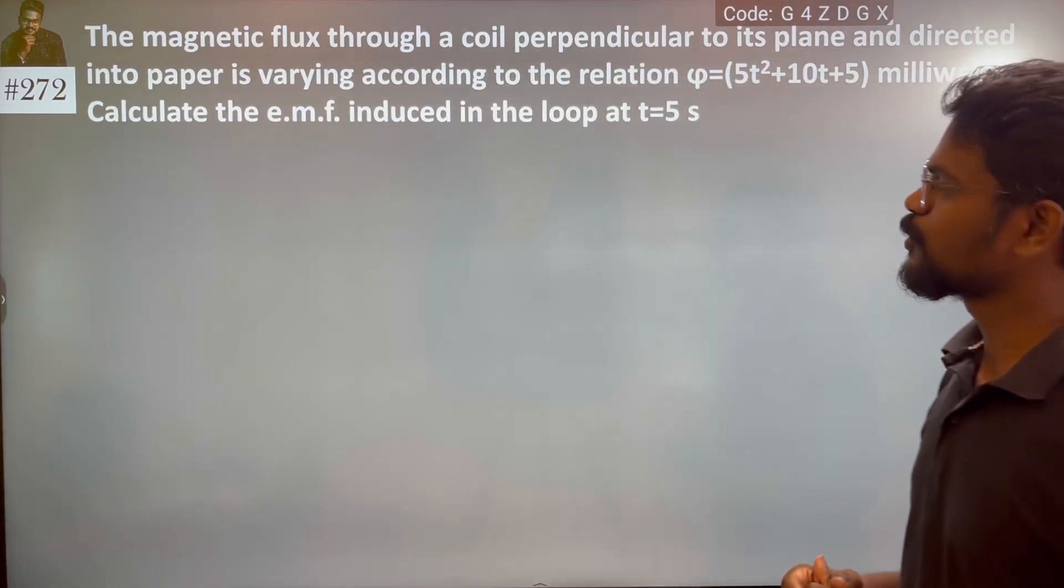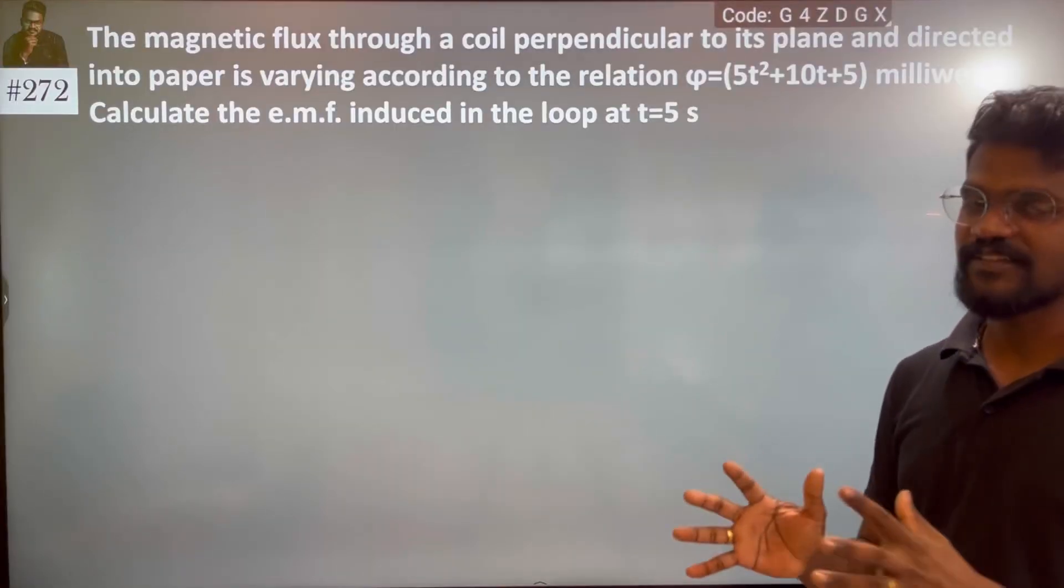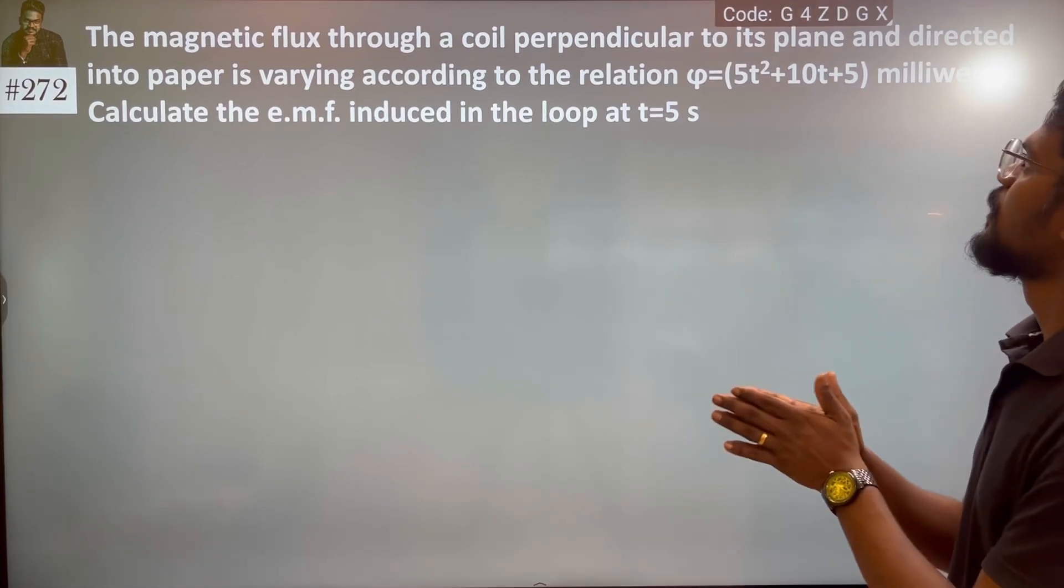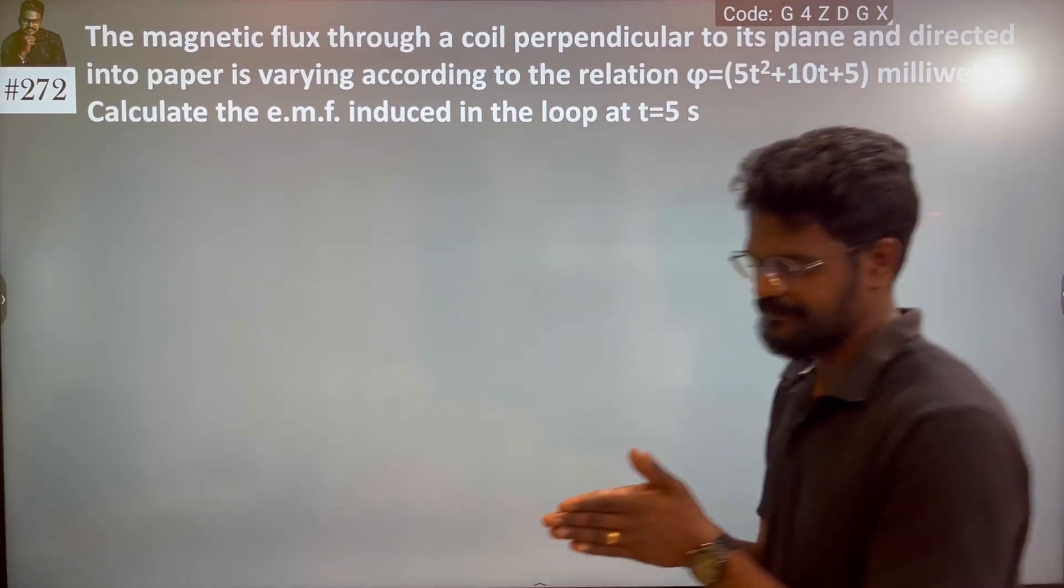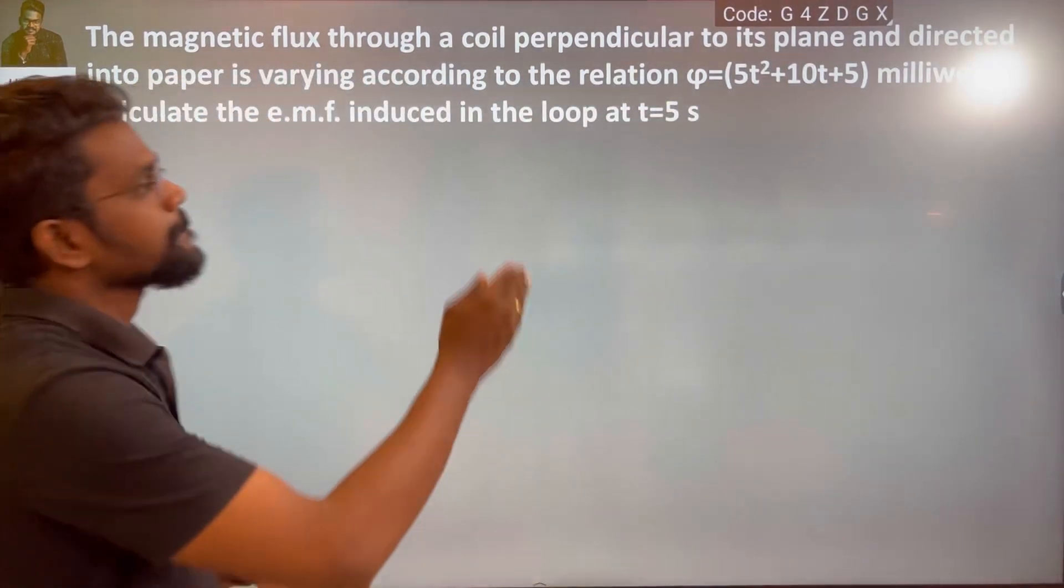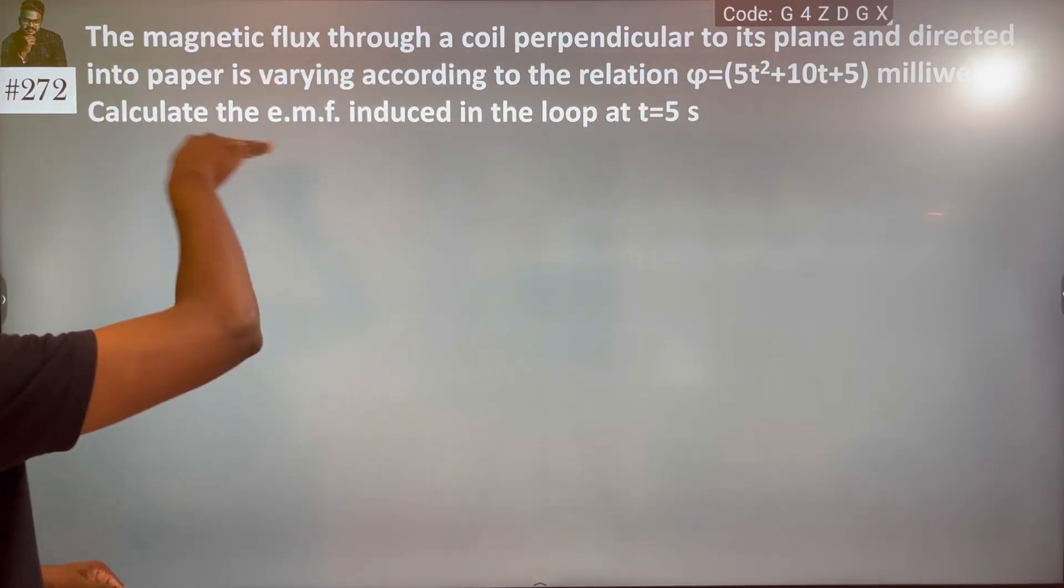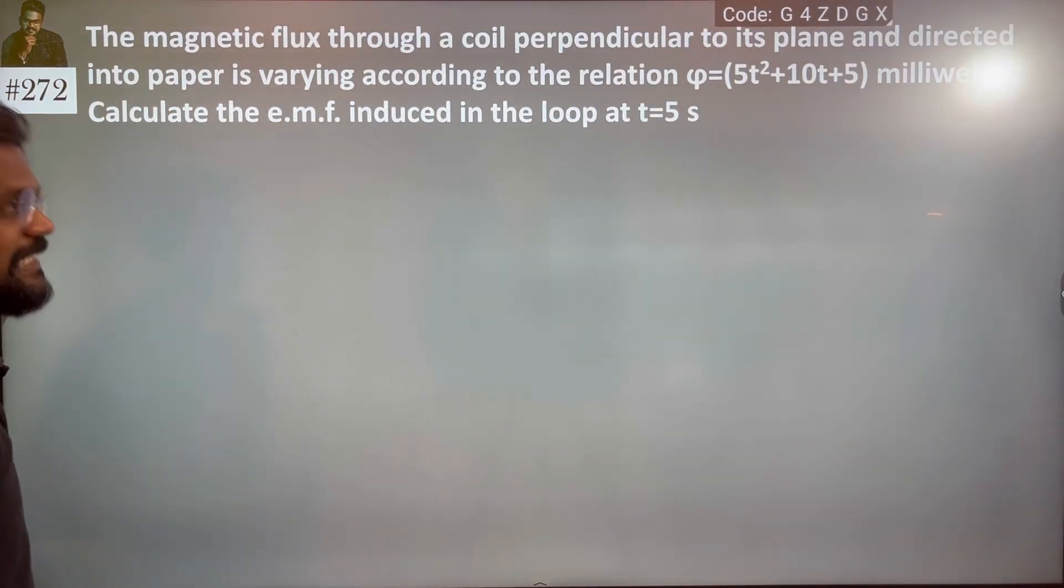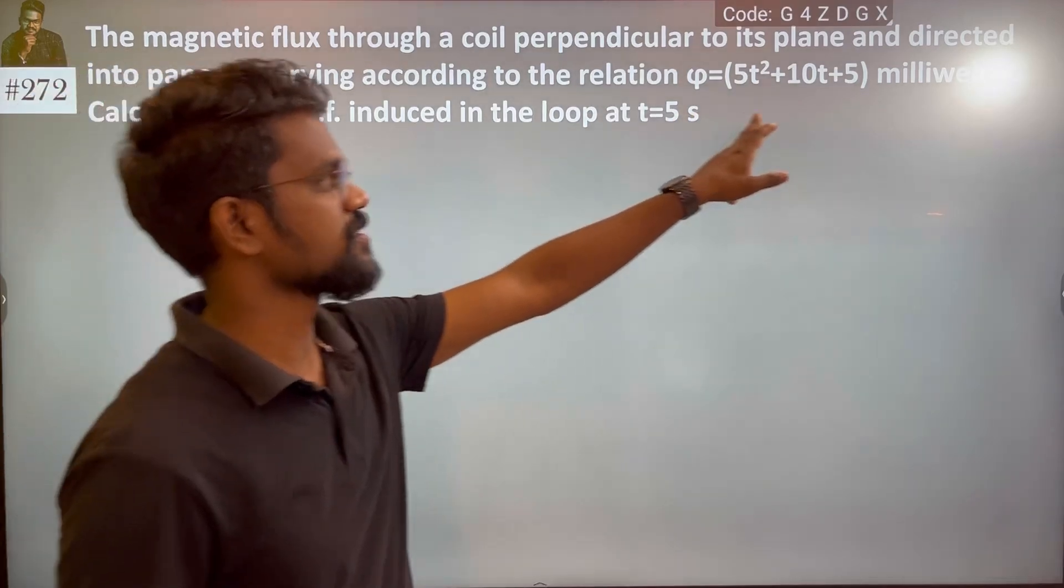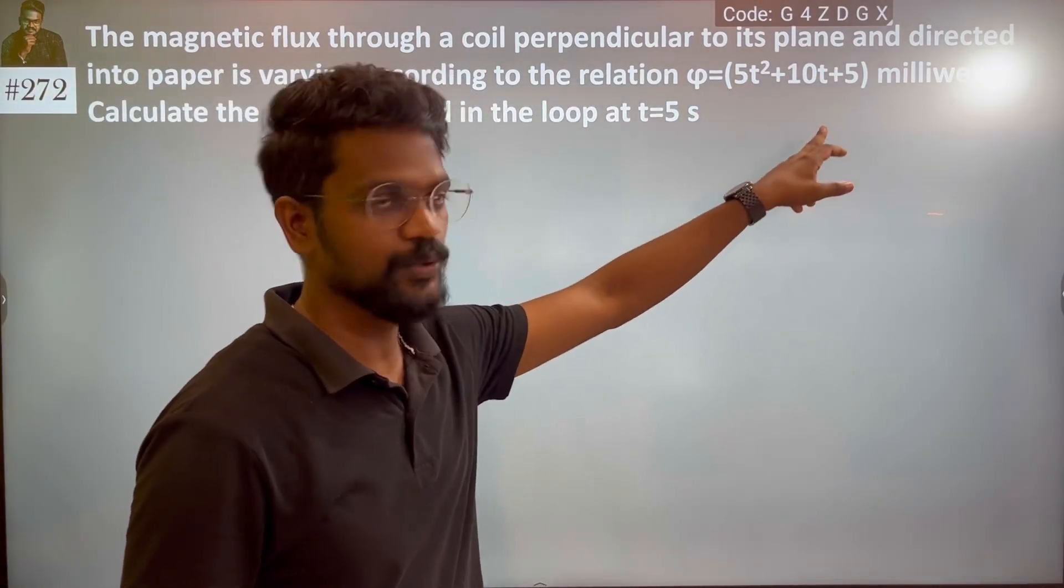The magnetic flux through a coil perpendicular to its plane, directed into the paper, is varying according to the relation. So flux is changing with respect to time.